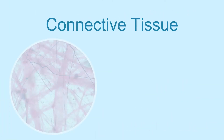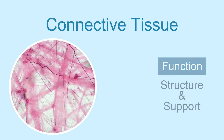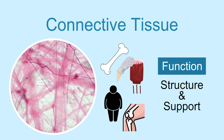Connective tissue is made up of many different types of cells that are involved in structure and support of the body. Bone, blood, fat, and cartilage are all connective tissues. Connective tissues can be dense, as bone cells are, or loose, as adipose tissue or fat cells are.